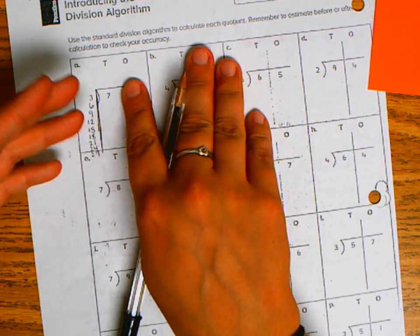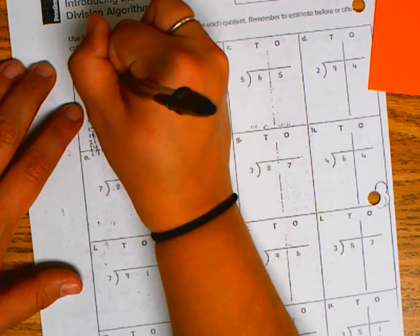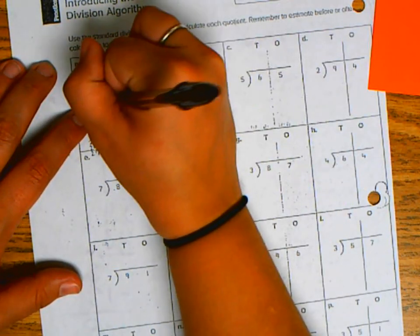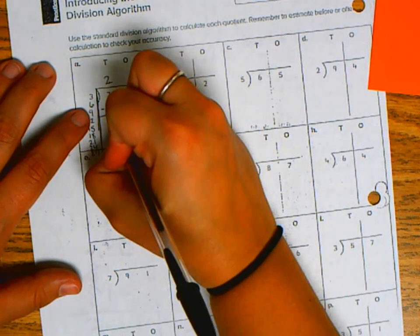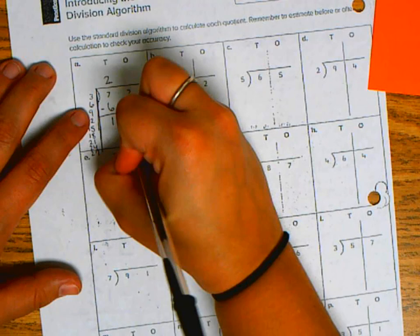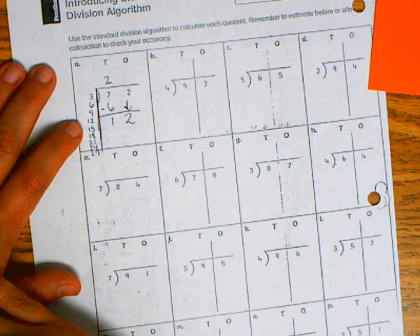So divide, multiply. Well, 2 groups of 3 can go into 7. And subtract. 7 minus 6 is 1. Bring it on down. So I bring the 2 down. And bring it on back.